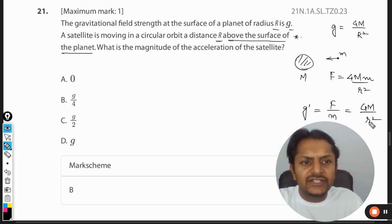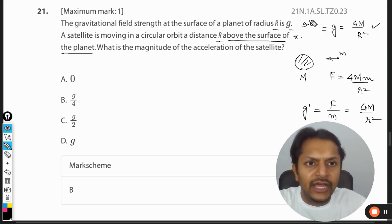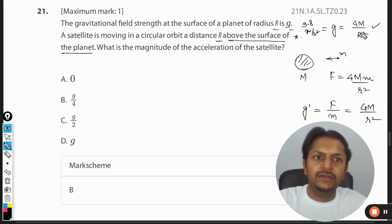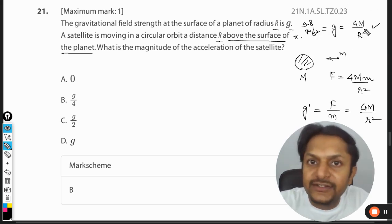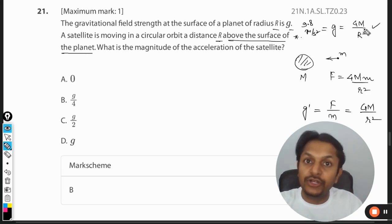But if this small r is equal to capital R, the formula reduces to this. And this value comes out to be 9.8 meter per second square because every variable here is actually a constant. So you just plug in the value and you get the 9.8 value.